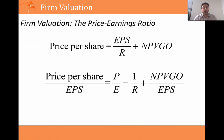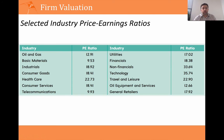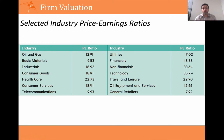If your company has a higher price-earnings ratio than the industry it operates in, that tells you it has high levels of growth opportunities in the future — one to keep an eye on. Similarly, if the company's price-earnings ratio falls while the industry's stays the same, that tells you information has come in suggesting the growth opportunities aren't as good as expected. I've got industry P/E ratios here from my book, but they change all the time, so don't take these as ones you'll use forever.